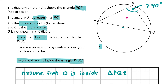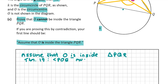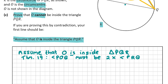If we assume O is inside the triangle, we use Theorem 19, which states that the angle at the center of a circle is twice the angle at the circumference when both stand on the same arc. So the angle POQ must equal two times the angle PRQ, since O is assumed to be the center.